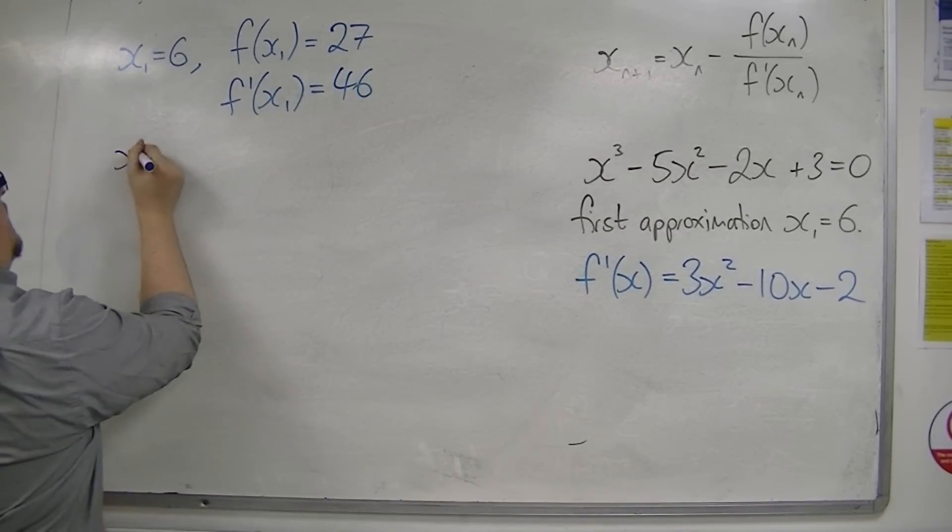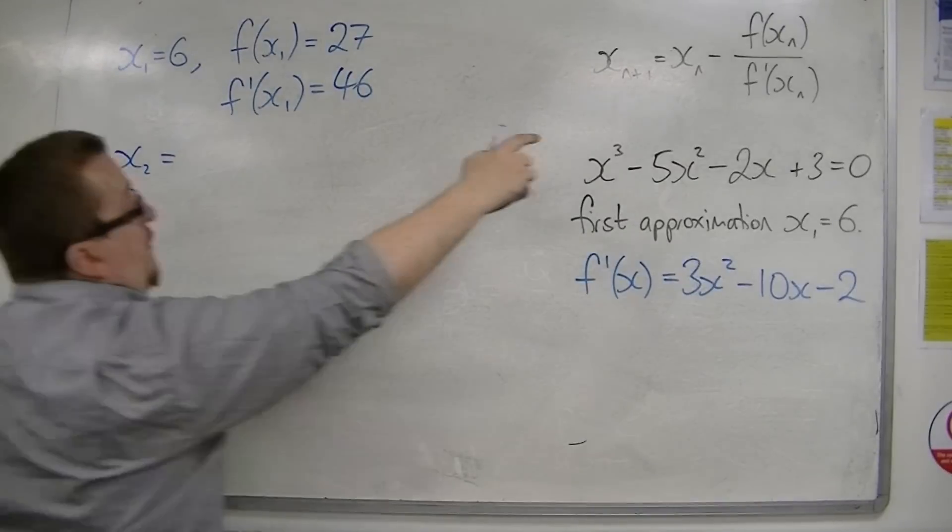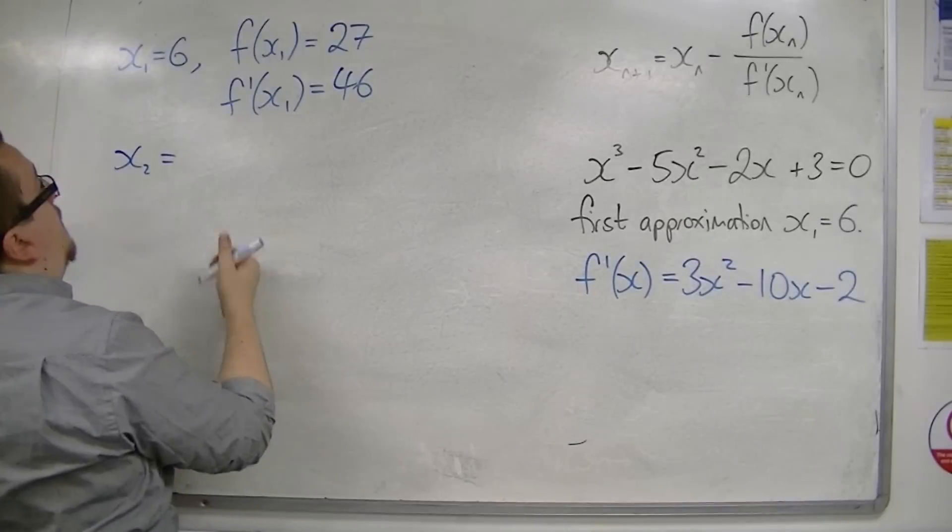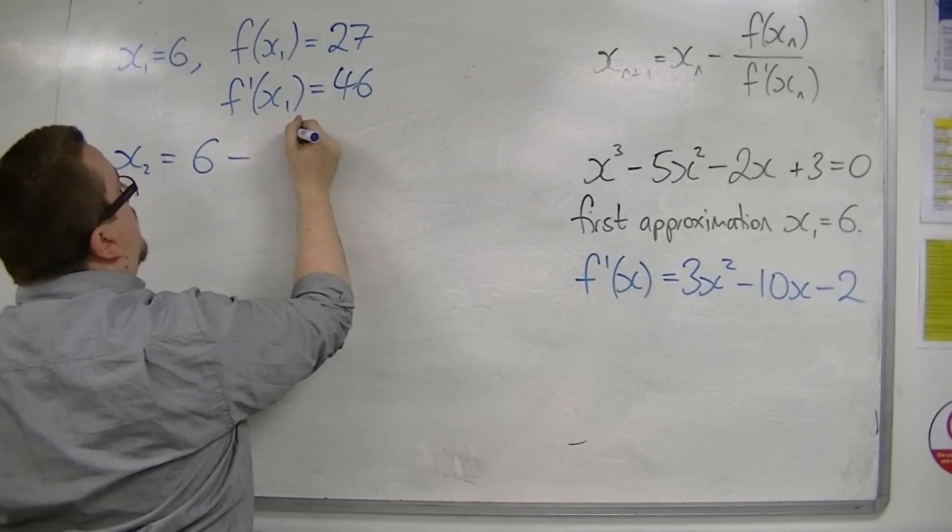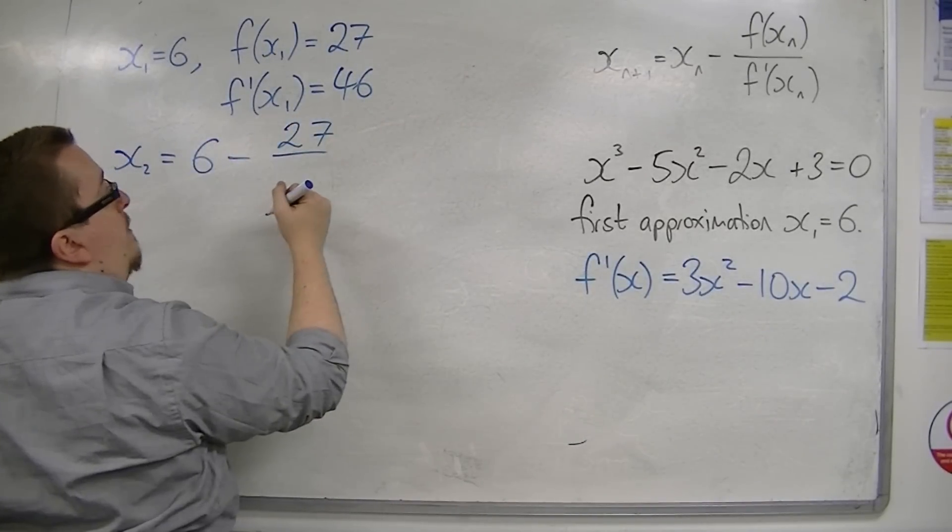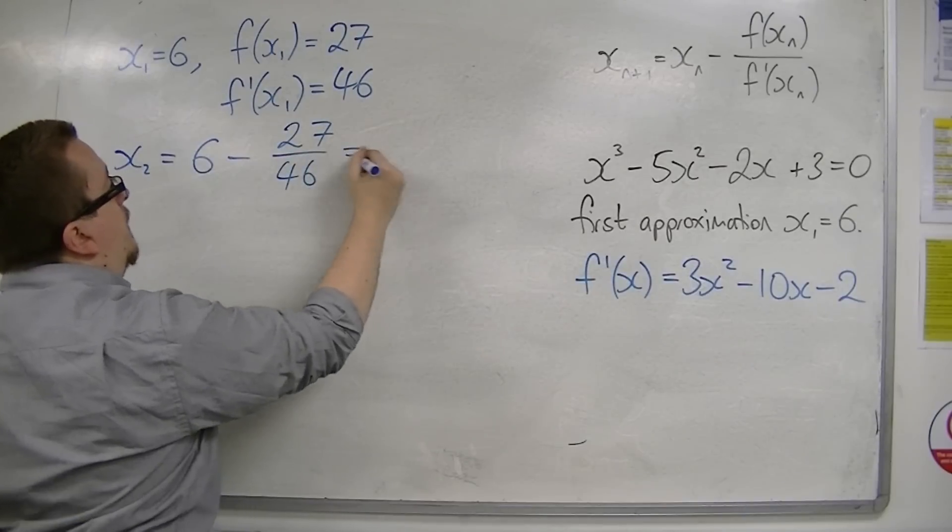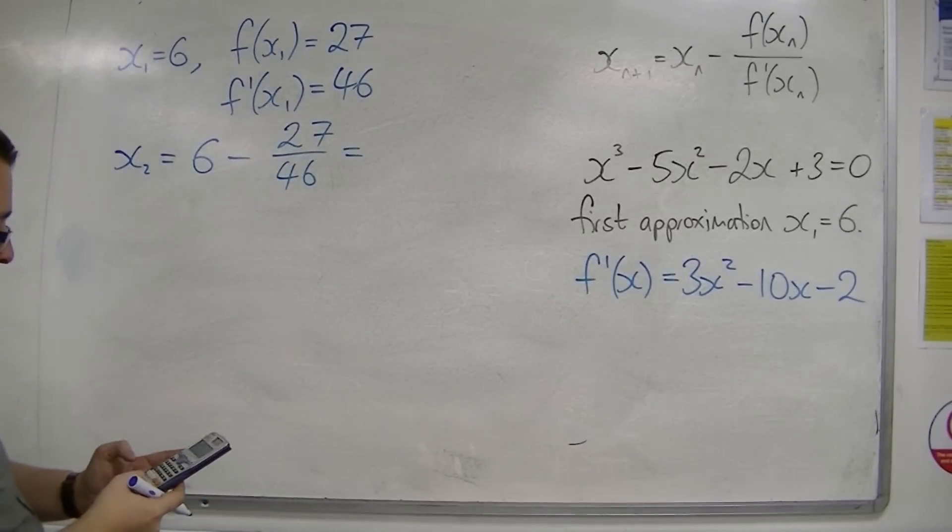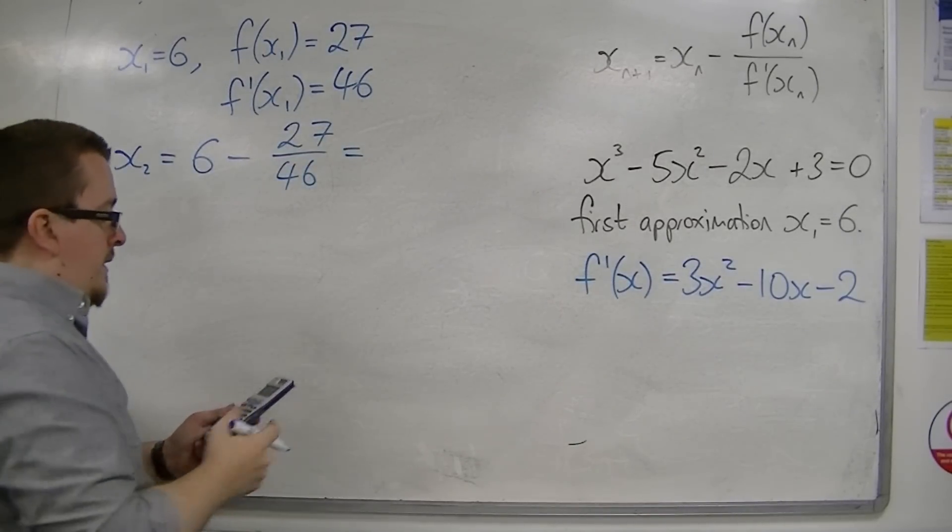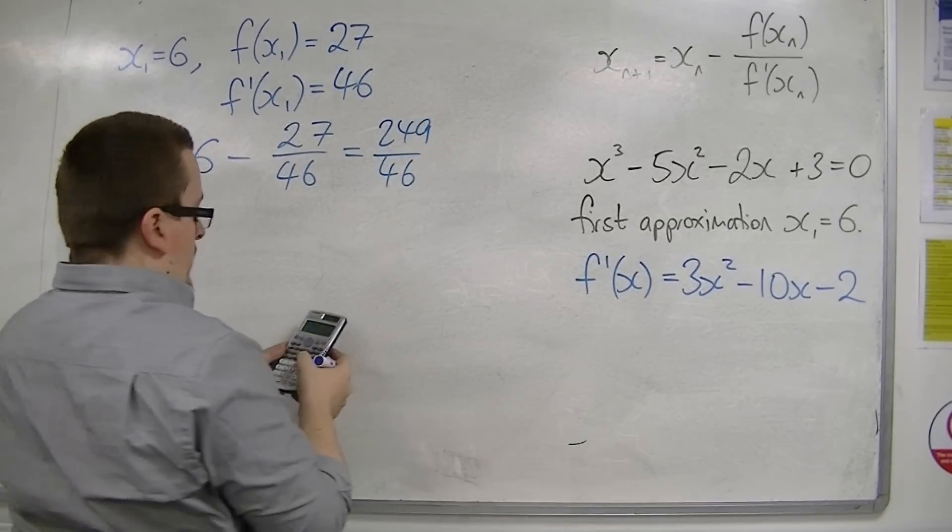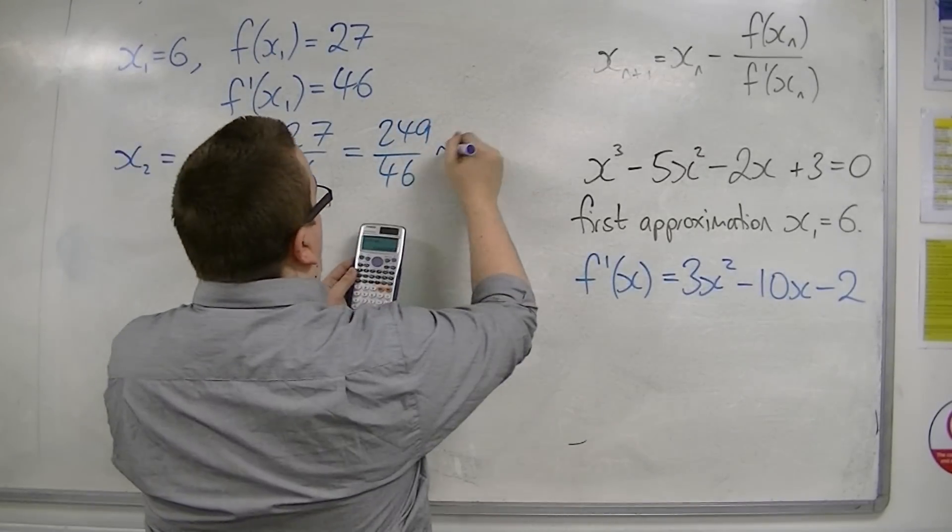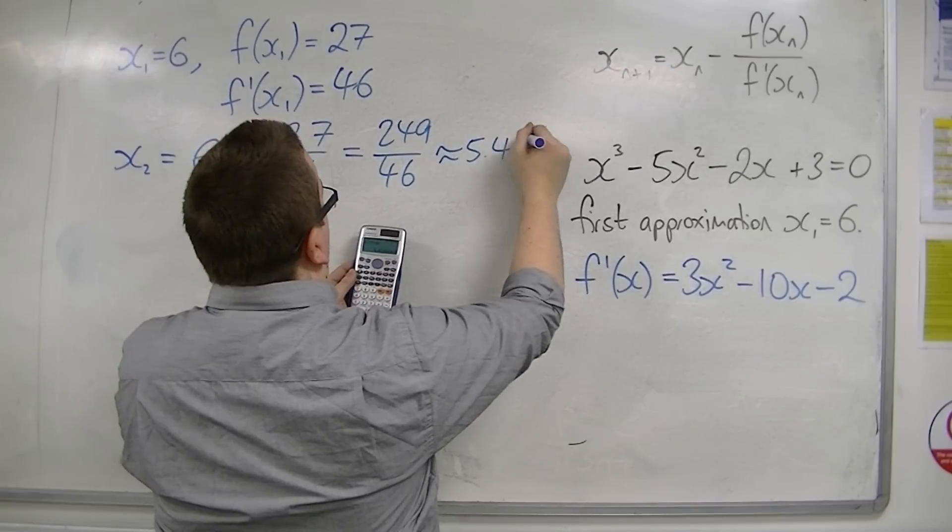So that would allow me to find x2. So x2 is equal to x1, 6 take away f of x1 over f prime of x1. So 6 take away 27 over 46 gets me 249 over 46, which is approximately equal to 5.413.